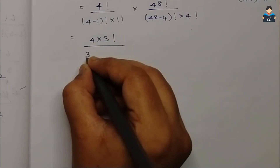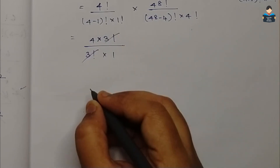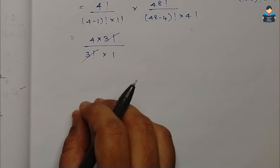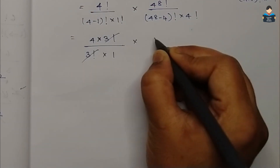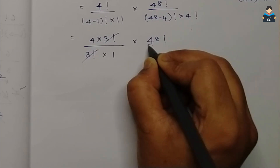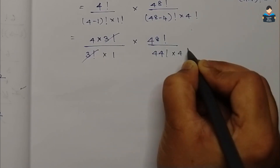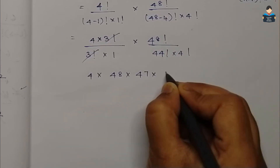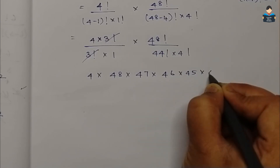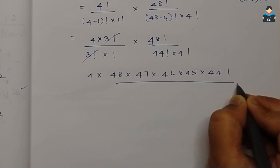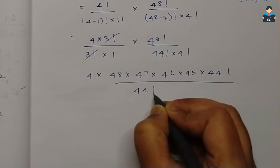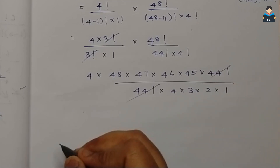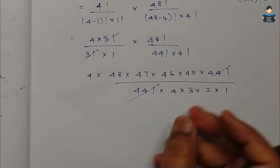So 4−1 is 3 factorial into 1. The 3 factorials cancel out, leaving 4. Then, 4 into 48 into 47 into 46 into 45 into 44 factorial, divided by 44 factorial into 4 into 3 into 2 into 1. The 44 factorials cancel out.